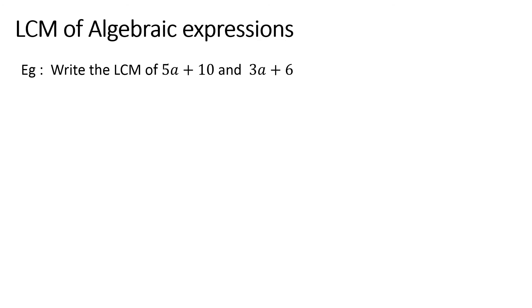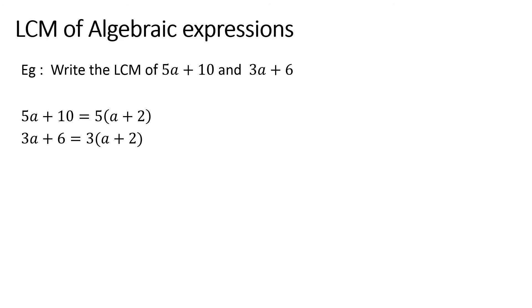The next section is to find the LCM of algebraic expressions. Look at this example. The first step is to factorize the given terms. Here 5a plus 10 can be written as 5 times (a plus 2), where 5 is taken out of the bracket, and the next case can be written as 3 times (a plus 2) where 3 is taken out. Remember, after factorizing you can double-check your answer by removing the brackets and getting the same expression.